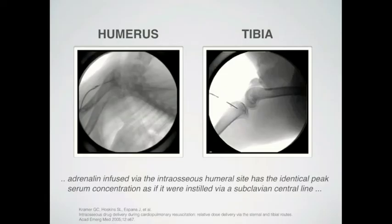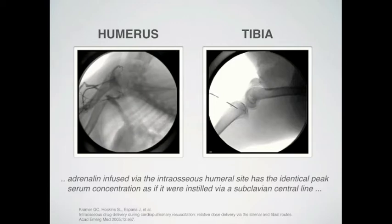These video recordings in which contrast is applied to the humerus and tibia will confirm how quickly drugs reach systemic circulation. On the humerus example on the left side, you will see the contrast reaching the right heart ventricle in a matter of seconds. You can see how the contrast passes through the humerus and now reaches the right ventricle. The same applies for the tibia, with the contrast reaching the popliteal vein very rapidly.